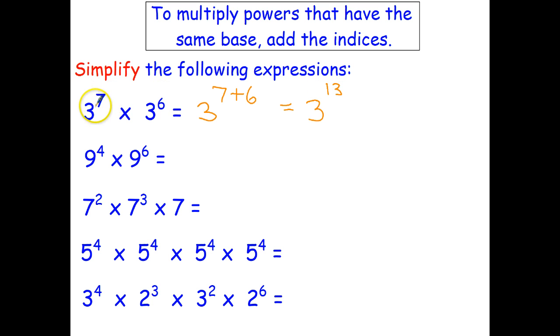If we'd expanded that, we would have had to write 7 threes and 6 threes all multiplied together, which can be written as 3 to the power of 13. So this saves us the time of having to expand it.